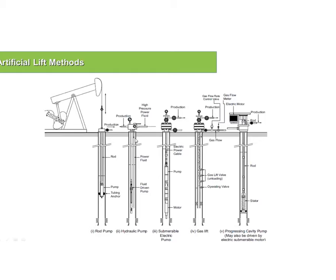The hydraulic pump uses a high-pressure fluid that goes down and drives a pump, which introduces energy to the reservoir fluid to push it up. The ESP — electrical submersible pump — uses a motor powered by electricity. This motor drives a centrifugal pump; when reservoir fluid enters, centrifugal energy is given to the fluid and it moves upward.